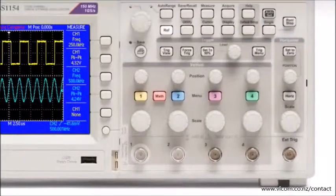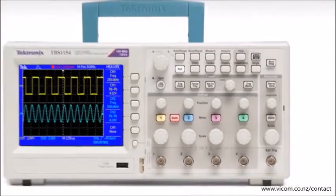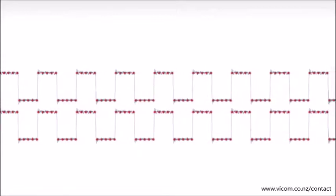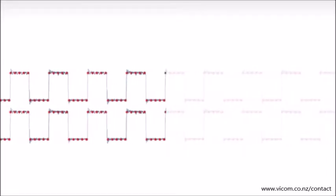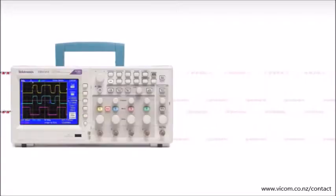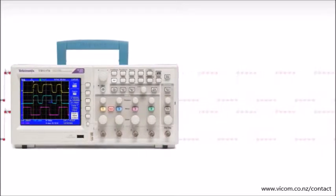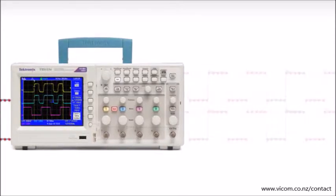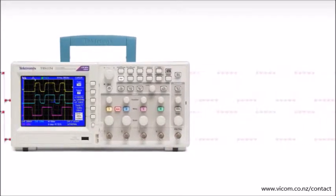Tektronix's proprietary sampling technology is at the core of the TBS 1000 series performance. Ample oversampling reduces the risk of unexpected aliasing, and unlike some entry-level scopes, the TBS 1000 sampling rate doesn't drop when you turn on additional channels.